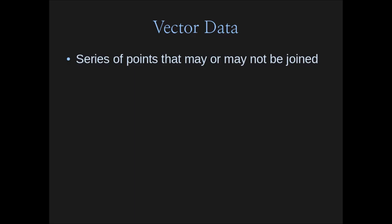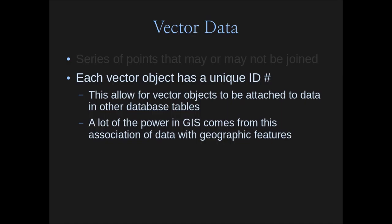Let's talk about vector data now. In principle, vector data here is very similar to vector images — we just have a series of points that may or may not be joined, depending on what we're doing with them. Each vector object has some sort of unique ID, which allows all the vector objects to be attached to data in other database tables. This is how we exploit the full power of GIS — taking vector data mapped in spatial space and applying them to other data like population, disease incidence, vegetation cover.